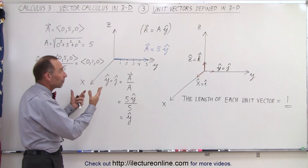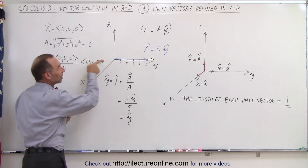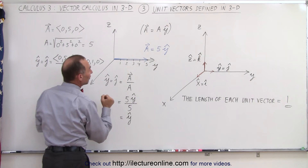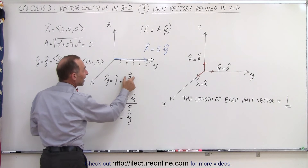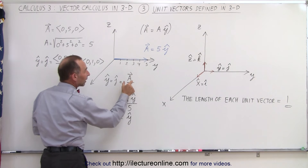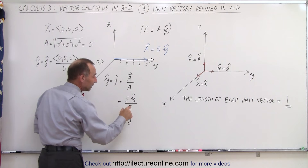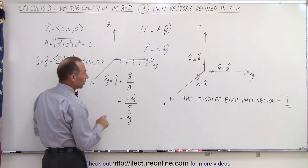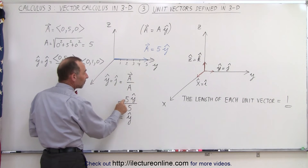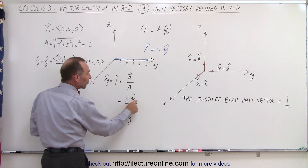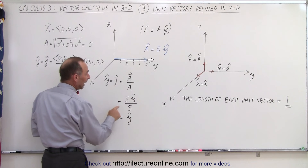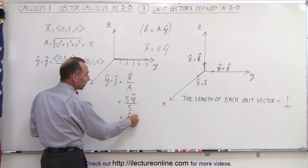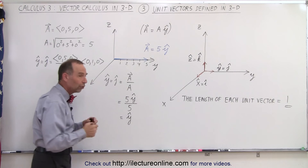Here's an example of a single one of those. A vector pointing in the y-direction has a magnitude of 5. I take the vector, I divide it by its magnitude, and I get the unit vector in that direction. Since a is defined as 5 units in the y-direction, and I divide it by the magnitude, the 5s cancel out, and I simply have the direction.